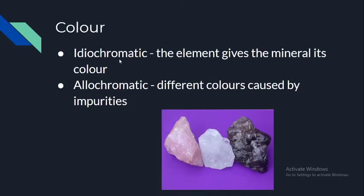For color, there are two subcategories. There is idiochromatic color, which is when the element or the actual molecule of the mineral gives it that color. For instance, gold is an example — gold has that yellowy color because of the actual atom that makes up gold.